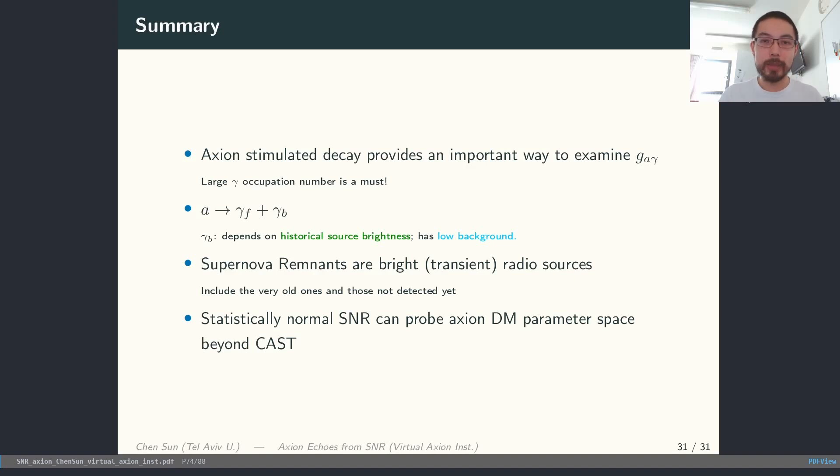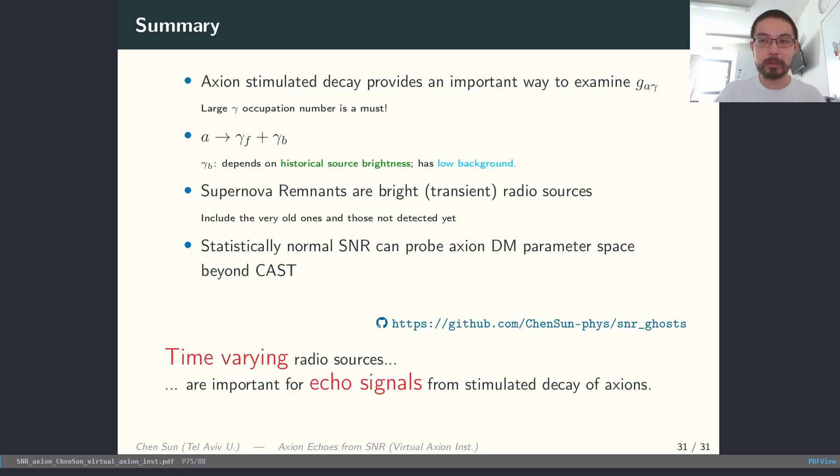So just to summarize, axion stimulated decay provides us a very interesting way to enhance the signal that comes from the tiny coupling between axions and photons. In particular, if this stimulated decay is caused by some inhomogeneous radio source, there will be one photon traveling forward, another photon traveling backward toward the source, and that is our echo signal. We argue that the historical source brightness matters a lot for this echo signal, and we identify supernova remnants as good candidates that were once bright in radio band, and they can contribute to strong echo signals. And we show that statistically normal supernova remnants can probe axion dark matter in interesting parameter range. And you are very welcome to play with the code, and if you have ideas, I'll be very happy to chat.